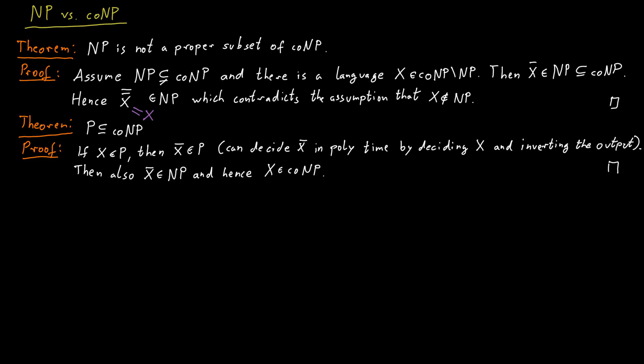So from X being in P, it follows through this line of reasoning that X must also be in co-NP, and therefore P must be contained in co-NP. Furthermore, we can conclude that if P equals NP, then NP must equal co-NP as well.